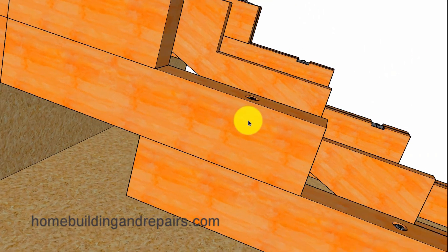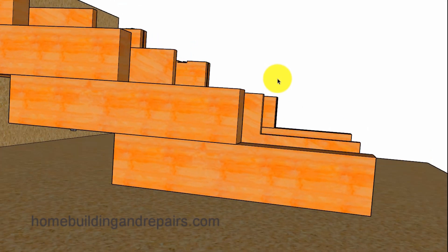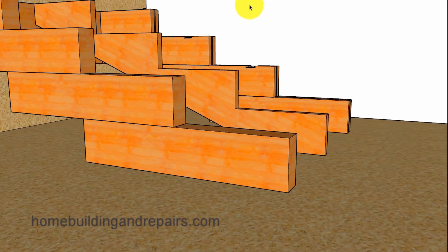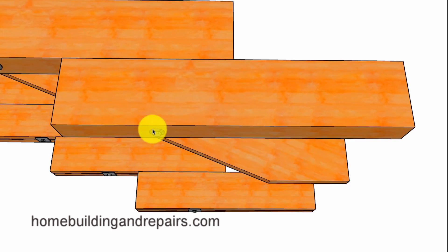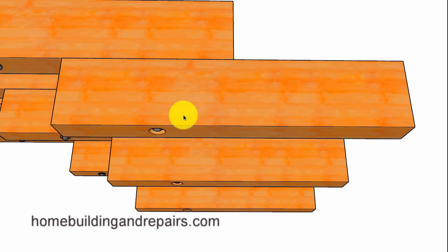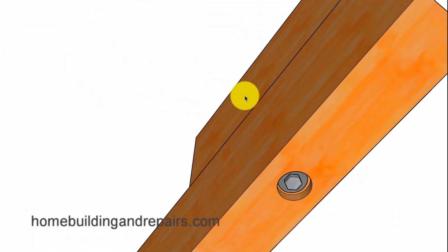Depending upon your design you might need to countersink the bottom bolts also. Another thing to think about along with whether or not you need to countersink the lower bolt here, especially if the stringers are going to be sitting on top of a flat surface like a concrete slab or a wood framed floor. Definitely another thing to think about when you are building your stringers.